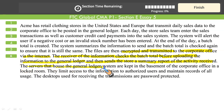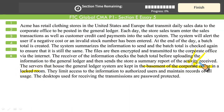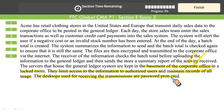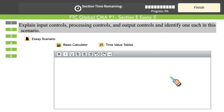The servers that house the journal ledger system are kept in the basement of the corporate office. This is a questionable point — flooding will destroy your facilities. Basement is not the right place to put your servers, even if it's a locked room. They limit access to the information to authorized users only and maintain a record of all usage. The desktops used for receiving transmissions are password protected, meaning authentication is needed to gain access.